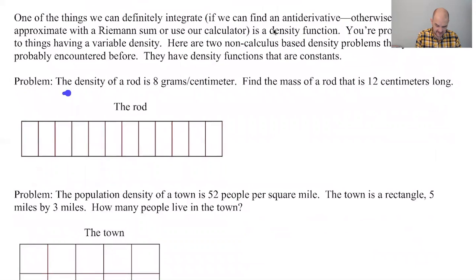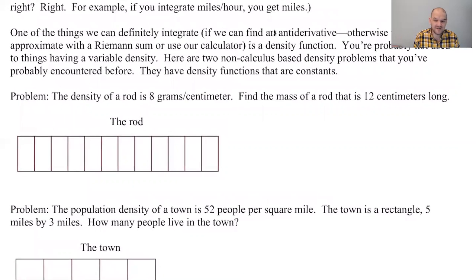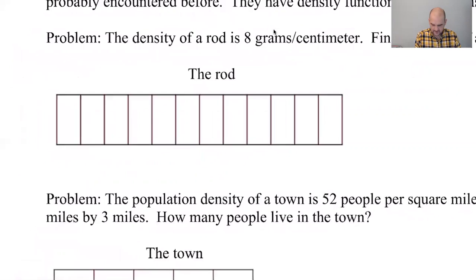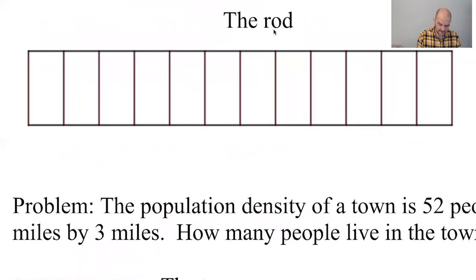So the density of a rod is eight grams per centimeter. So it doesn't matter how thick the rod is. It's just like every linear centimeter that you have of this rod, you get eight grams. So we want to find the mass of the rod that is 12 centimeters long. So to do that, I'm just going to over label this. So this is one centimeter and this is one centimeter. So all of these are one centimeter.